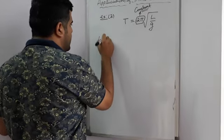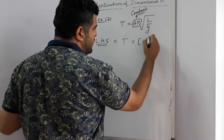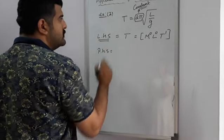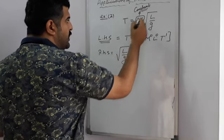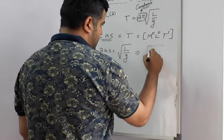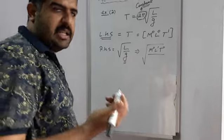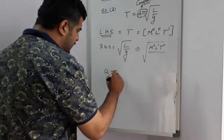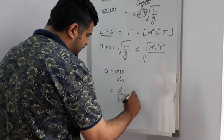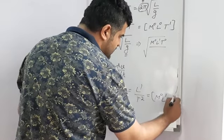Following the same procedure, left hand side is T, which has dimensional formula M⁰L⁰T¹. On the right hand side we have √(L/G). We ignore 2π because it is a dimensionless quantity. L has dimensional formula M⁰L¹T⁰. G is acceleration, and acceleration equals dv/dt, which is distance upon time over time, giving dimensional formula M⁰L¹T⁻².